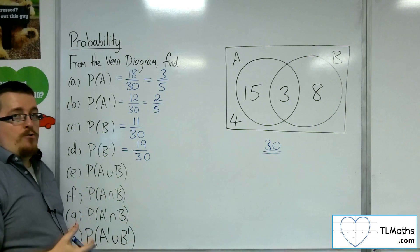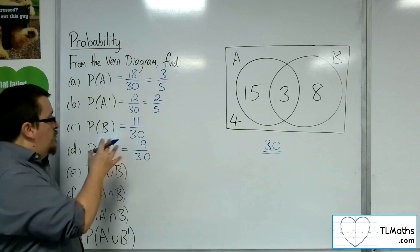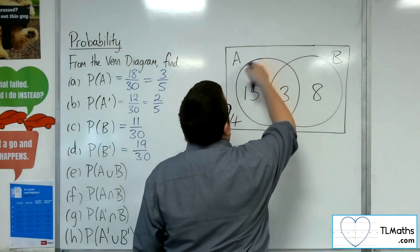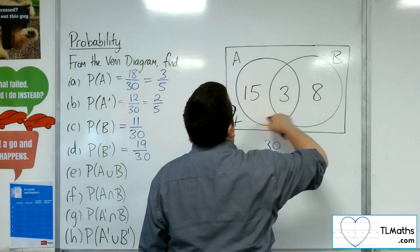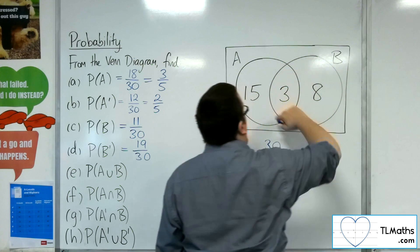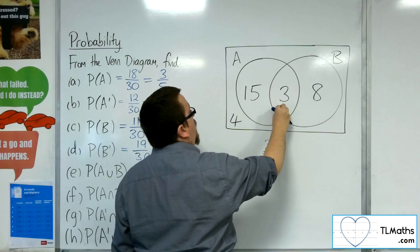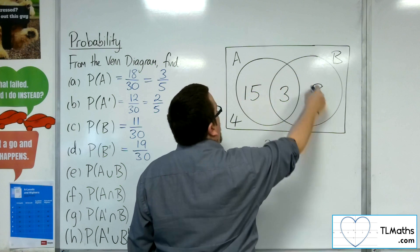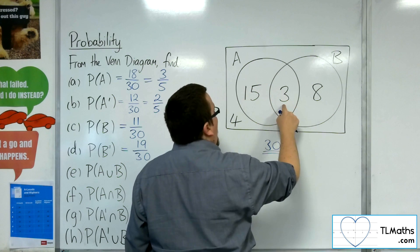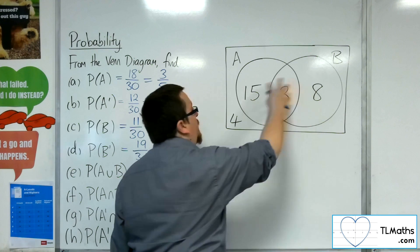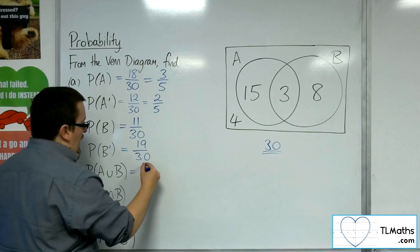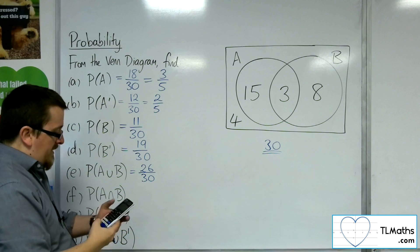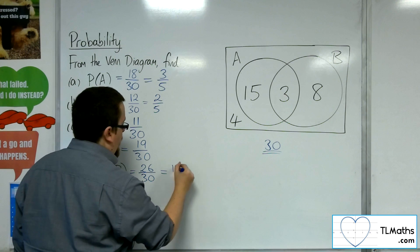Now the probability of A union B — that's the probability of A or B or both. So if you're inside A, or inside B, or inside both, we want those three regions added together. We've got 15, 3, and 8, making 26, so 26 out of 30. That simplifies down to 13 fifteenths.